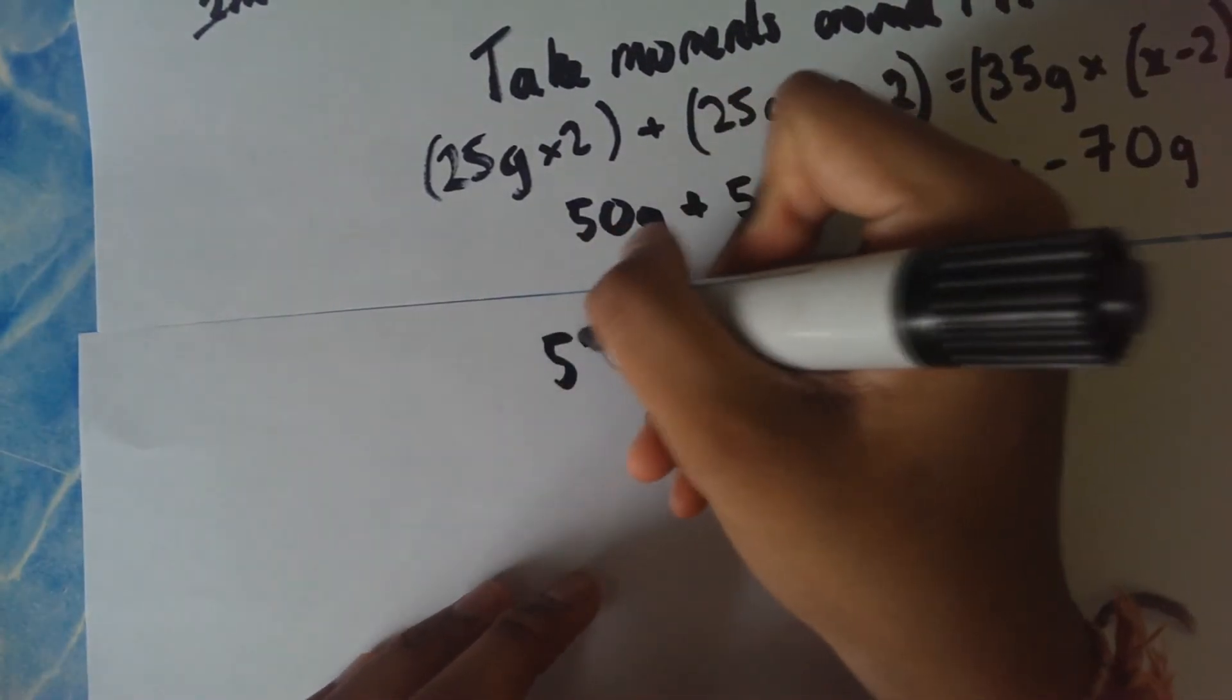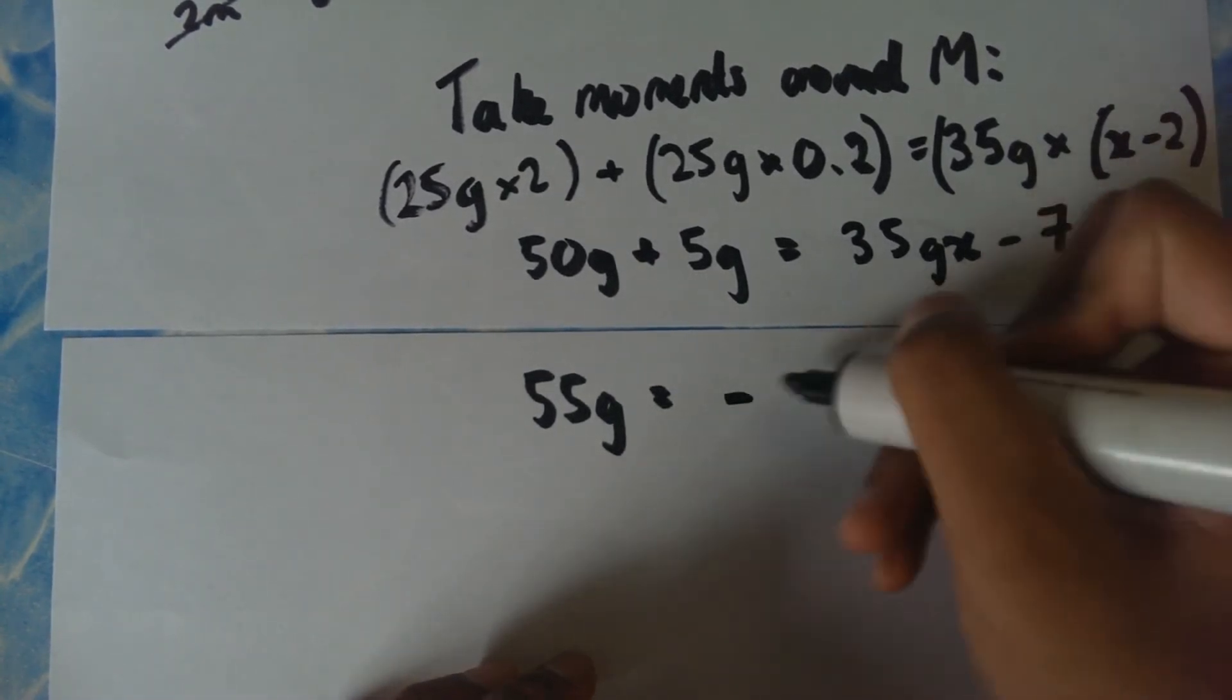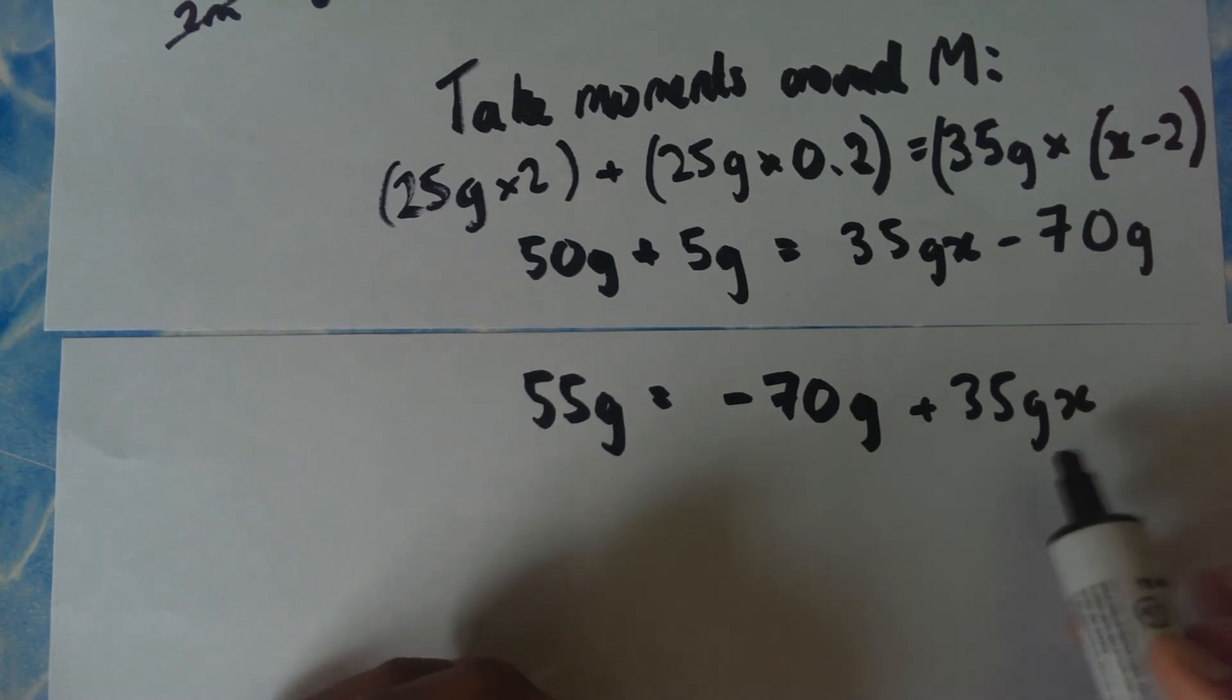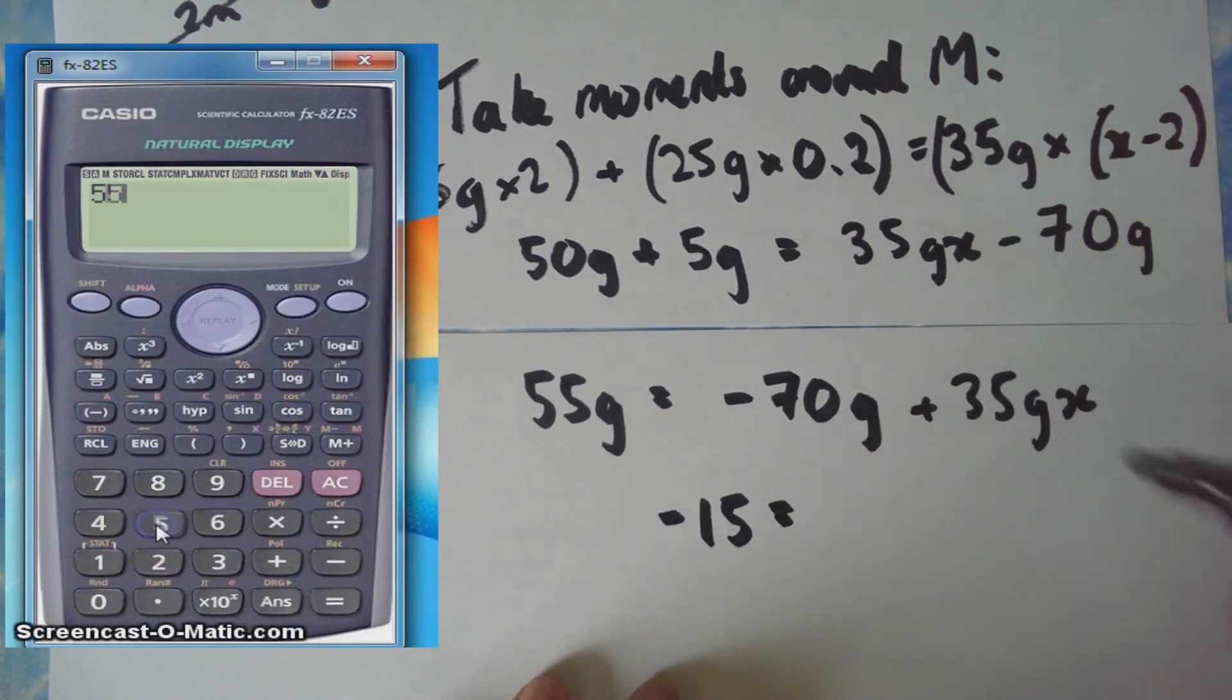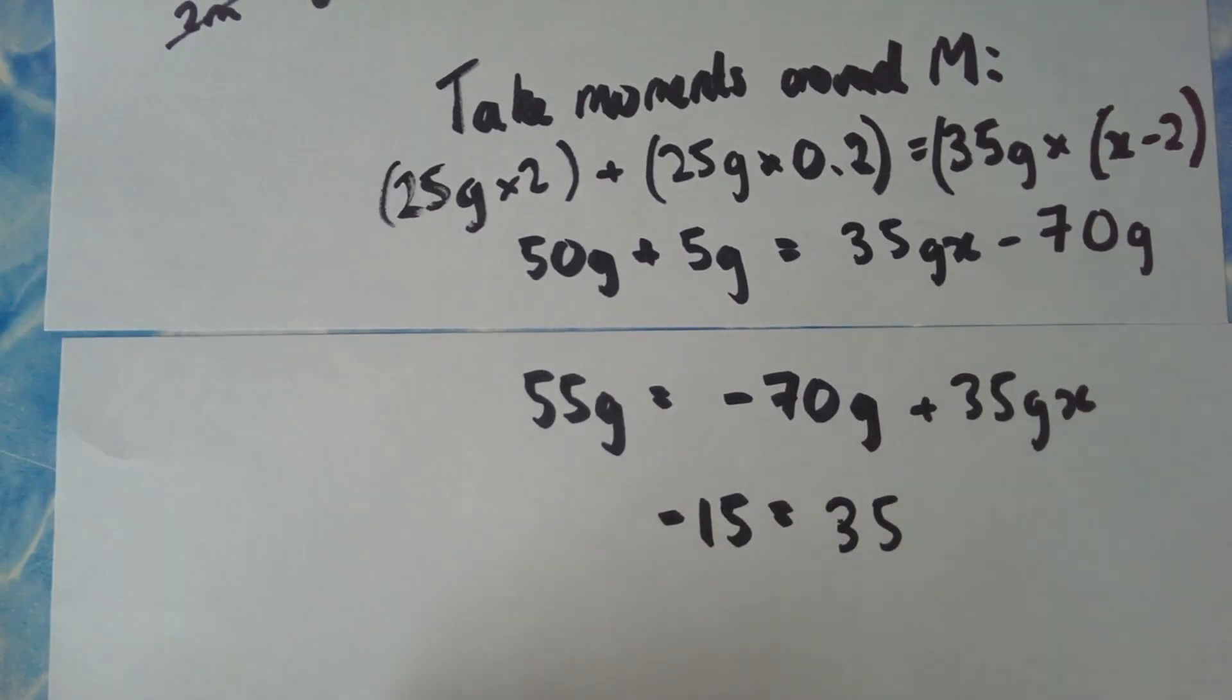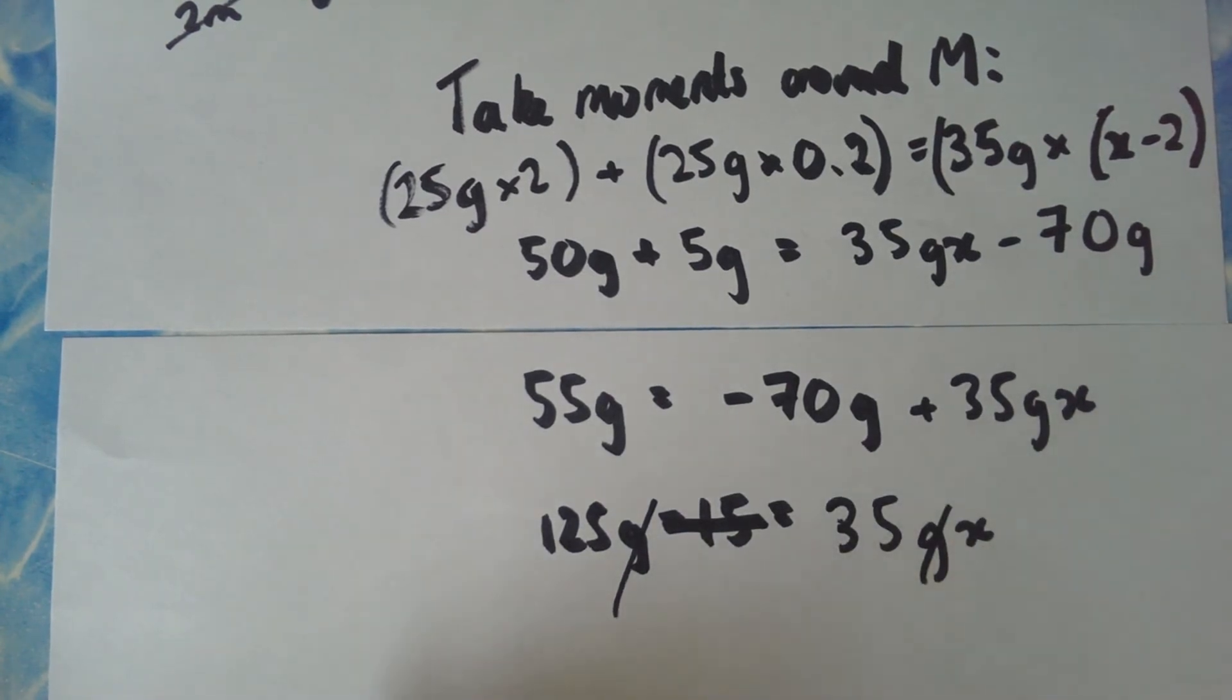So we're going to get 55g on this side, that's the sum of the clockwise moments around M, it's equal to minus 70g plus 35gx. Now we want to get rid of this other stuff, this 35g and g, just so we can get x on its own. So if I do 55 minus 70, I'm going to get minus 15. So minus 15 equal to 35. Sorry, minus - I apologize, that shouldn't be minus 70, that should be plus 70. If you worked that out then you're more on the ball than me. That is 125g is equal to 35gx. Now we can cancel out the g's there you go, and divide 125 by 35, which gives me...